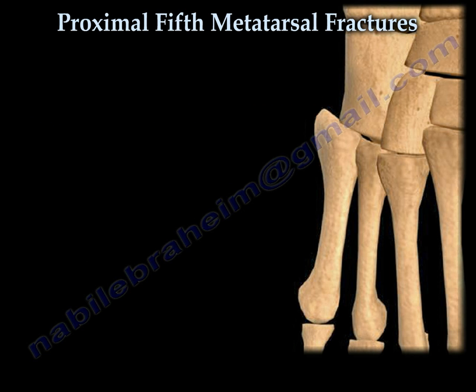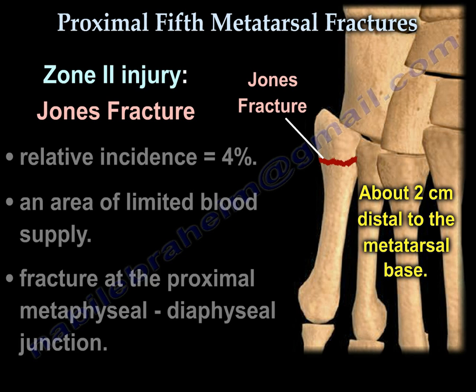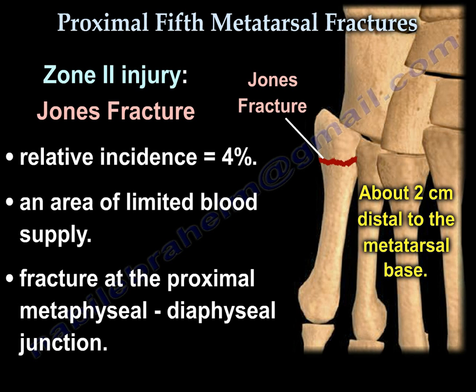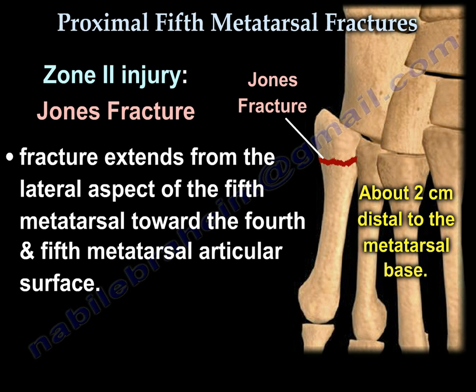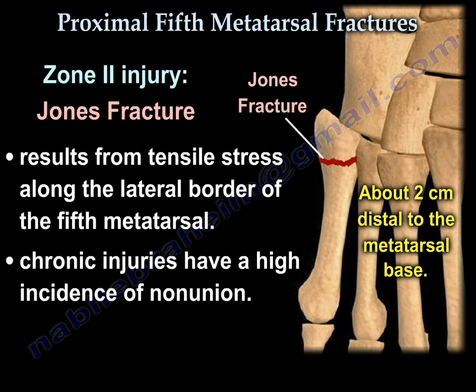A zone 2 injury is a Jones fracture. It has a relative incidence of 4%. It occurs in an area of limited blood supply at the proximal metaphyseal-diaphyseal junction. The fracture extends from the lateral aspect of the 5th metatarsal toward the 4th and 5th metatarsal articular surface. It results from tensile stress along the lateral border of the 5th metatarsal.